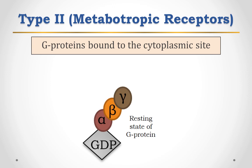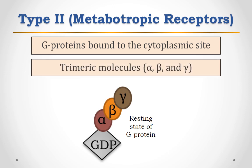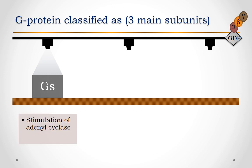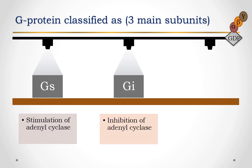These are heterotrimeric molecules, that is, having three subunits: alpha, beta, and gamma. Their further classification is based on the identity of their distinct alpha subunits. It is believed that there are three main varieties of G proteins. First is GS, that results in stimulation of adenylate cyclase. Second is GI, responsible for inhibiting adenylate cyclase. And the last one is GQ, responsible for controlling phospholipase C activity inside the cell.